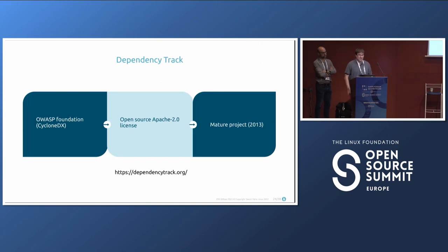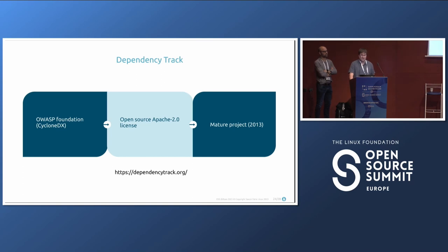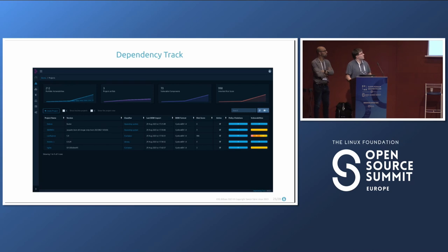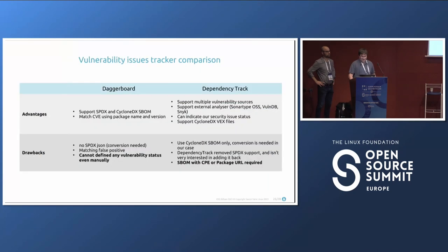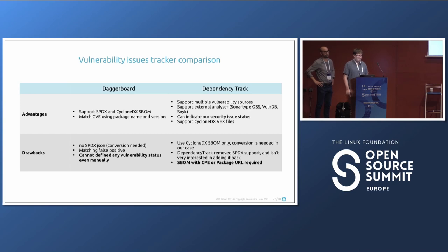The next tool is Dependency-Track. It is an OWASP Foundation project — the same foundation that created CycloneDX. It is also open source with Apache 2.0 license, and it's a more mature project: first release was in 2013. Here's a screenshot showing Dependency-Track providing grades, scores, and graphs.